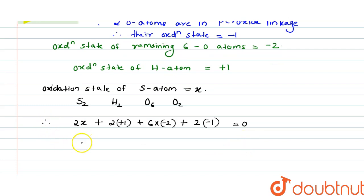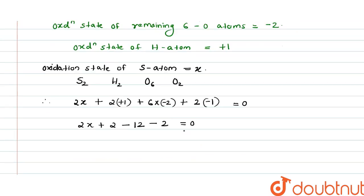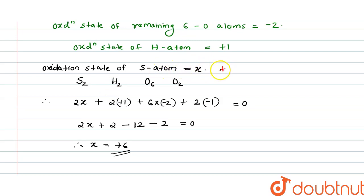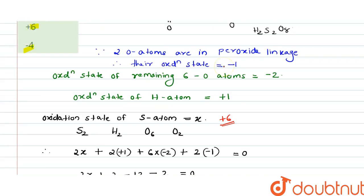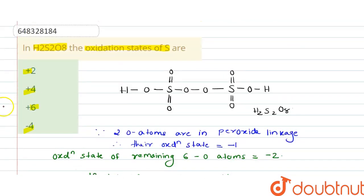Solving: 2x + 2 − 12 − 2 = 0, so 2x = 12, therefore x equals plus six. The oxidation state of the sulfur atom is plus six. Option C is the correct answer. Thank you.